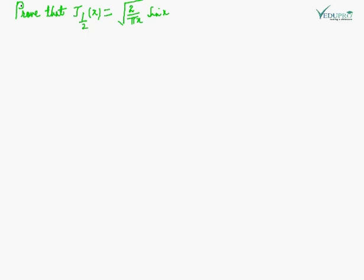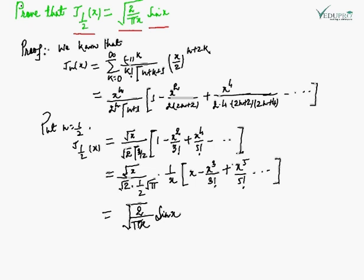Now we are going to prove a very important result: J_{1/2}(x) = √(2/πx) · sin(x). As we know, J_n(x) is equal to the summation from k = 0 to infinity of [(-1)^k / (k! · Γ(n+k+1))] · (x/2)^(n+2k). Now we are going to do this expansion putting k = 0, 1, 2, 3...